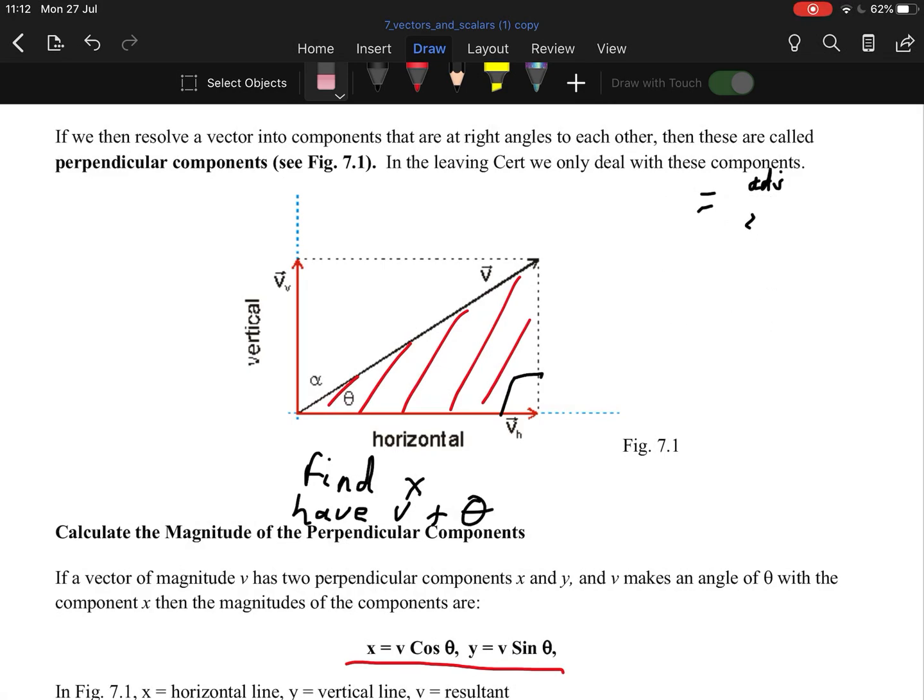And now we do the same for the vertical. Let's say you have the resultant and you have the angle. Well, that's going to be sine. And the same thing again. What is sine? Sine is the opposite over the hypotenuse. So sine is the opposite, which is here, which we said is the same as the y-axis, y over the hypotenuse, which is v. So y equals v sine theta. And there you go. That's where they come from.